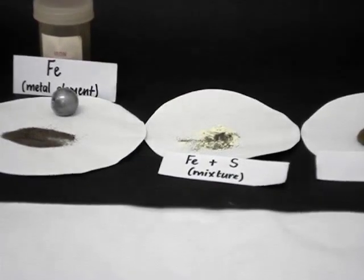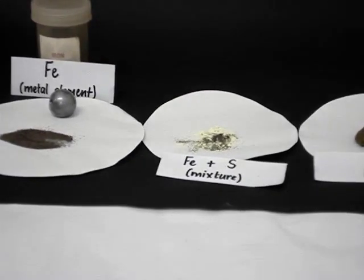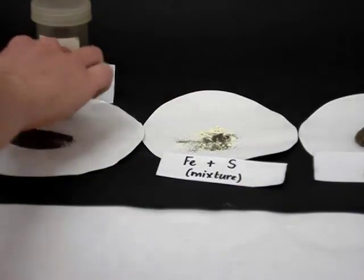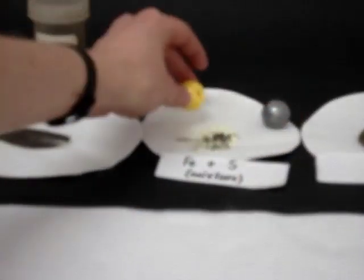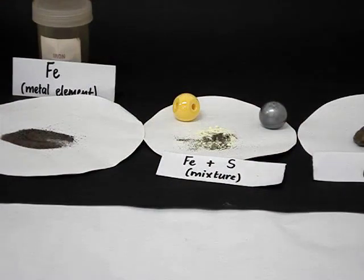So a mixture consists of two or more unbonded chemicals. The atoms, in this case, are not bonded with one another.